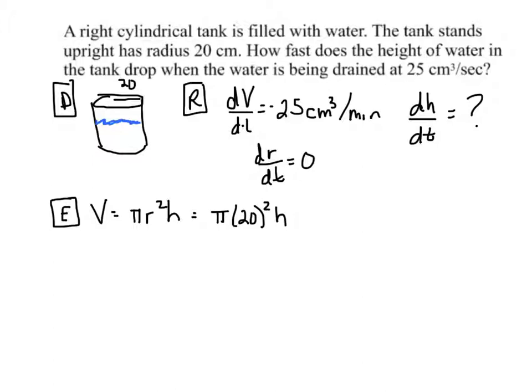If the radius was changing, we'd have to do product rule. But it's not. Okay, so we can just say that volume is equal to 400 pi h.